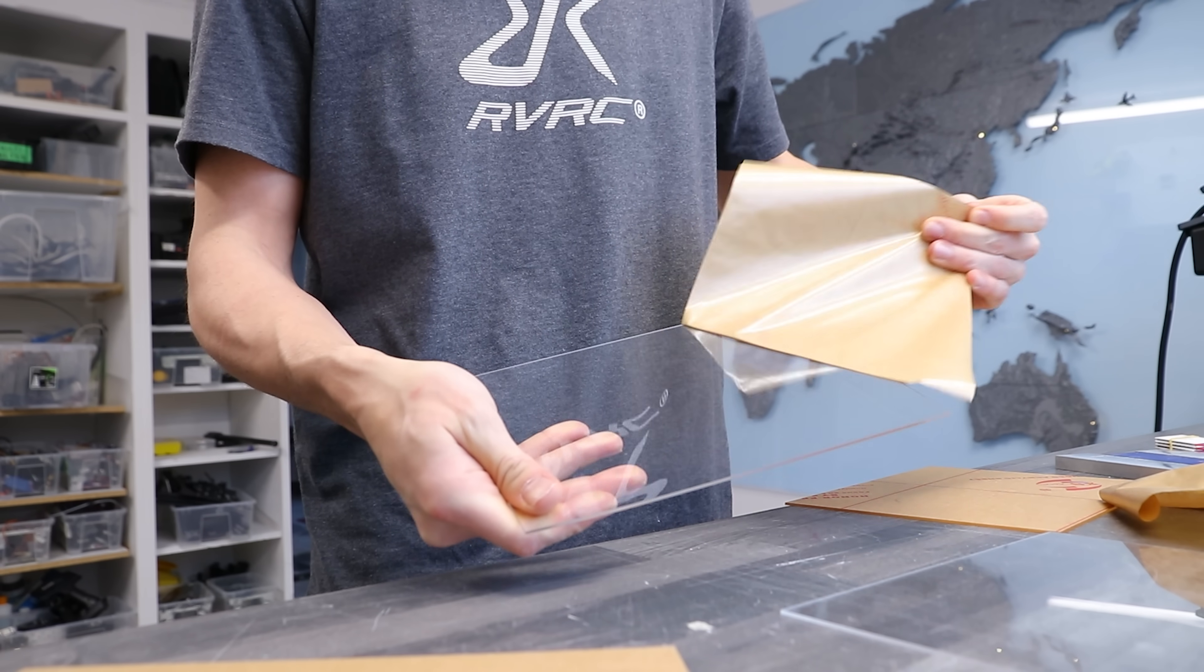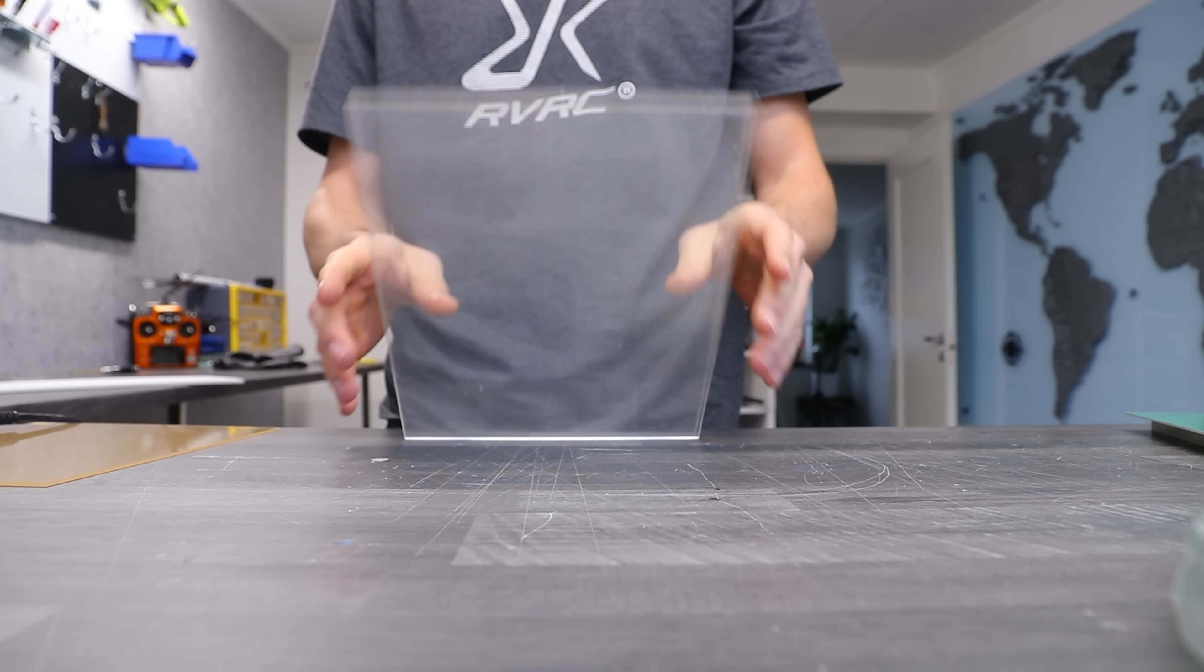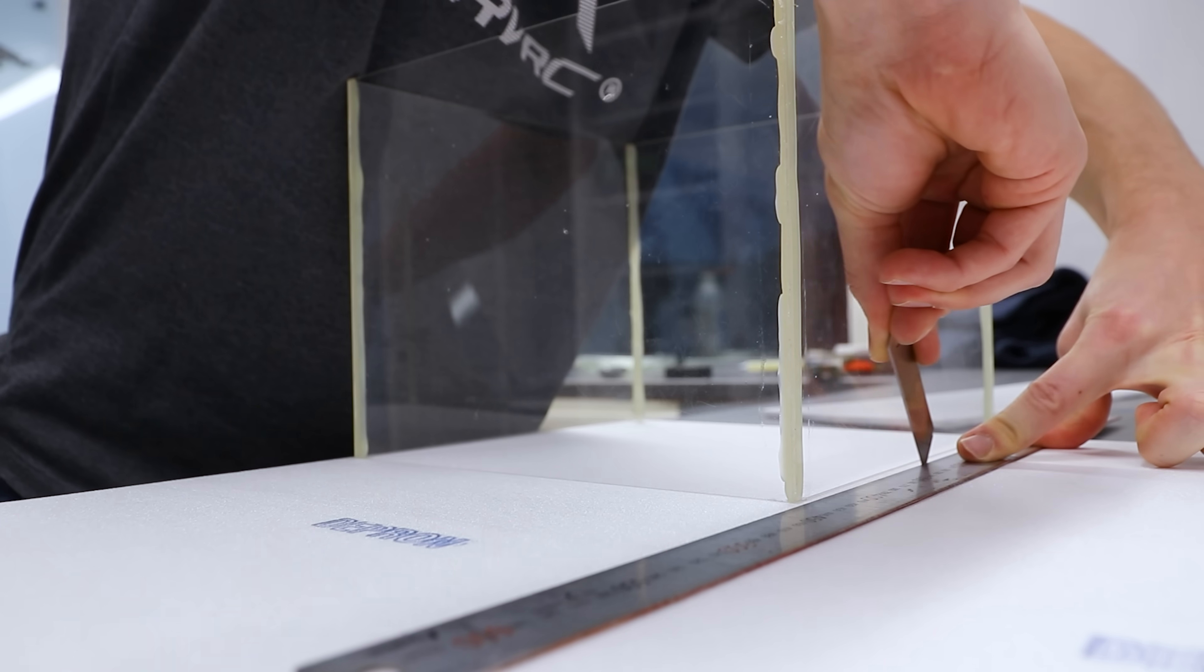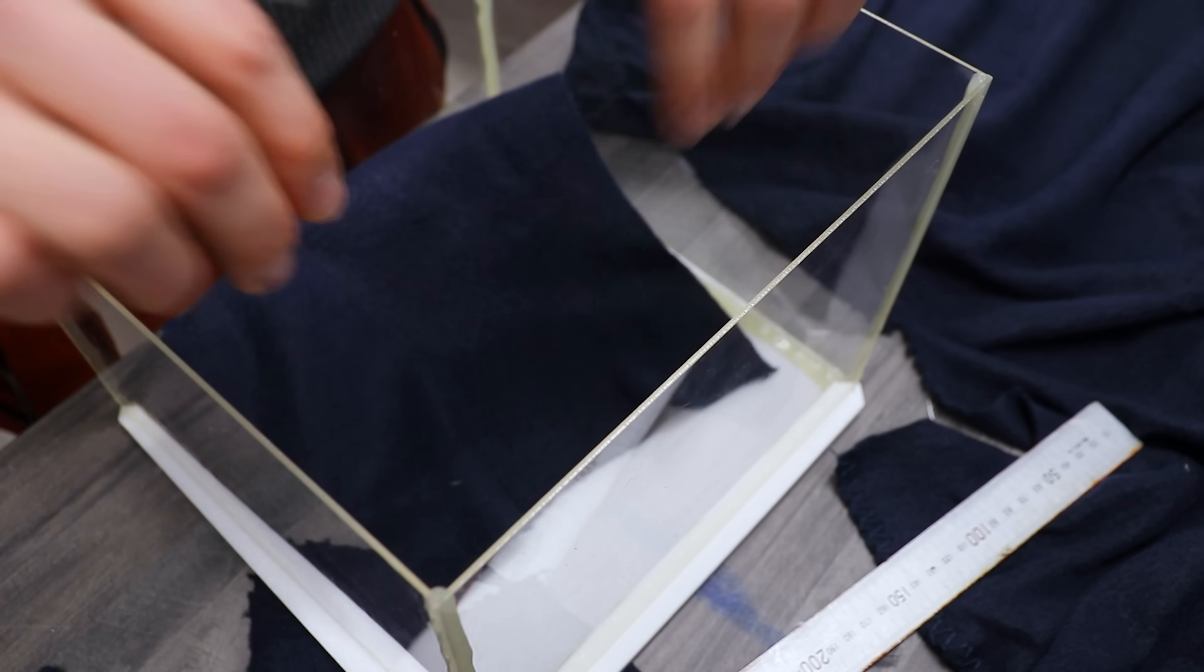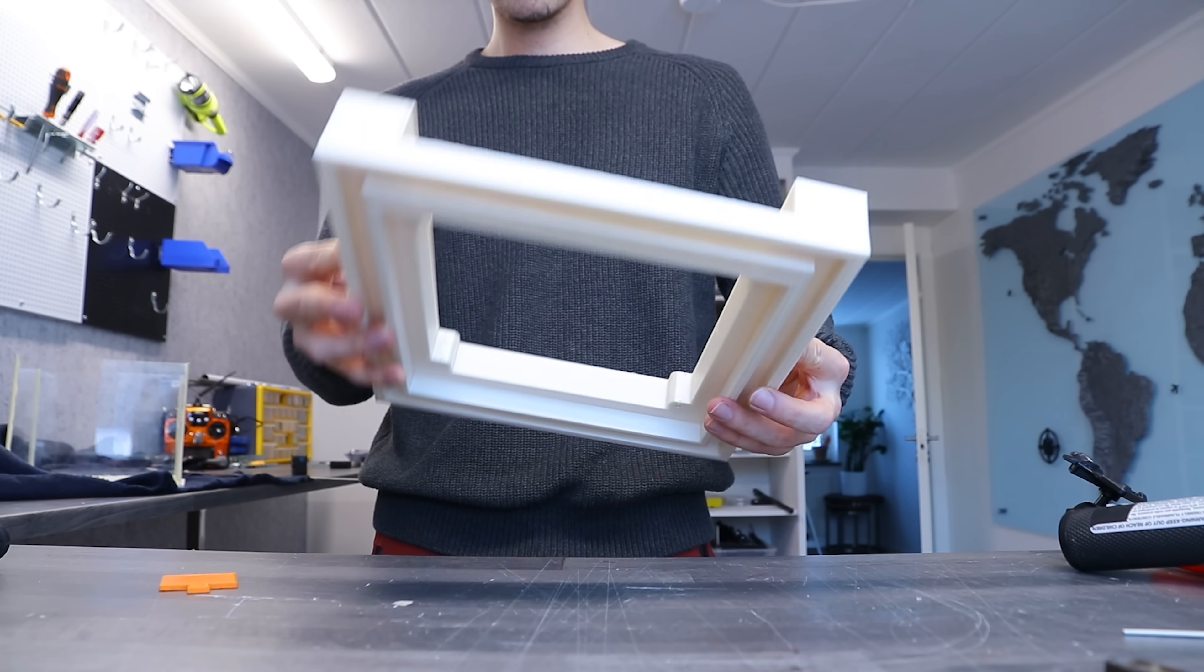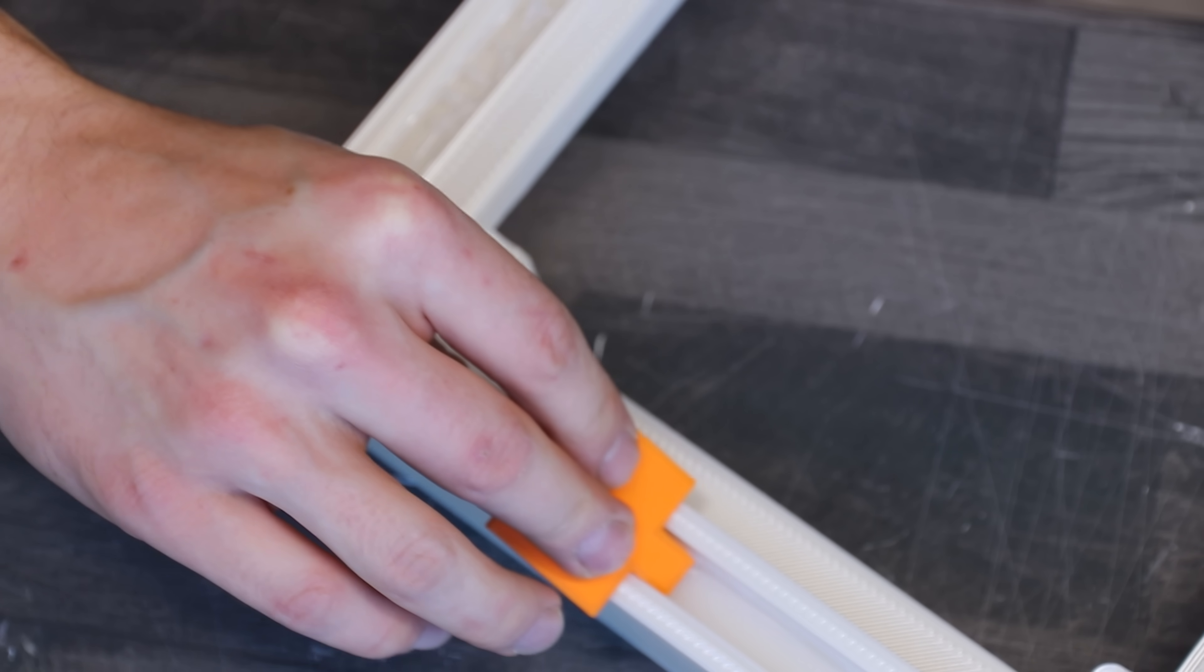So I started by removing the protective paper from the acrylic and constructed the chamber. I added the top piece of foam and glued fabric to it. Here's the base that I modeled and 3D printed. I added silicon in the groove to waterproof it.